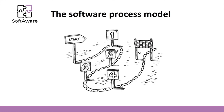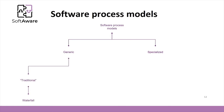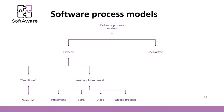In this course, we will investigate several historical and modern software process models in detail. There are many software process models separated into generic and specialized models. The most common are the traditional models — these are not so common nowadays, but many modern models include activities from these historical models. We will investigate the most known waterfall model, the iterative incremental models, prototyping, spiral, agile, and unified process models.